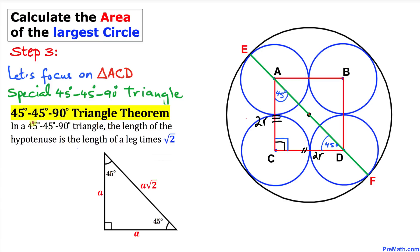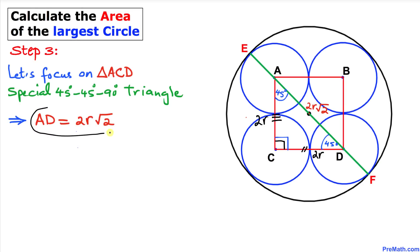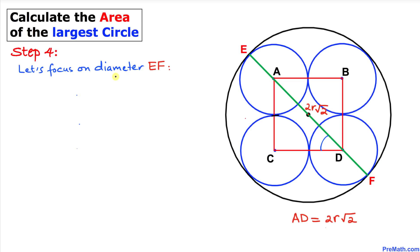By the 45-45-90 degree triangle theorem, the hypotenuse equals a leg times the square root of 2. If both legs are equal to a, the hypotenuse is a√2. Applying this here: our legs are both 2r, so the hypotenuse AD equals 2r times √2. Thus the length AD turns out to be 2r√2.